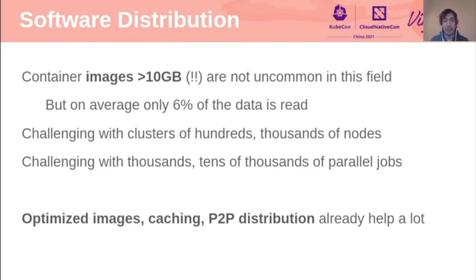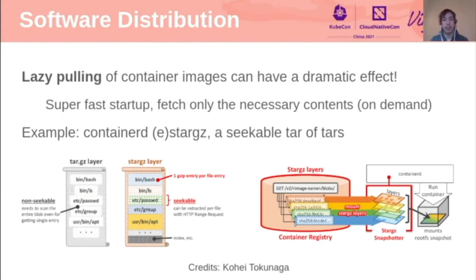To help with this, the idea would be to have optimized images, though this is not always possible. The second approach is caching, which is particularly important if you have geographically distributed clusters or nodes. Peer-to-peer distribution for offline distribution of the software is also a key approach. But one thing that really helps is this concept of lazy pooling — the idea that instead of downloading the full image before deploying your workload, you do a kind of remote mount of the image and gradually download only the content that is actually required and requested by the workload after the container is running.